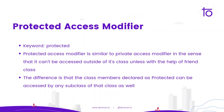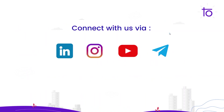The difference is that when we mark a class member with the protected access modifier, it can still be accessed by any subclass of that class as well, unless it is with the help of a friend class. This has been all about access modifiers — thank you.